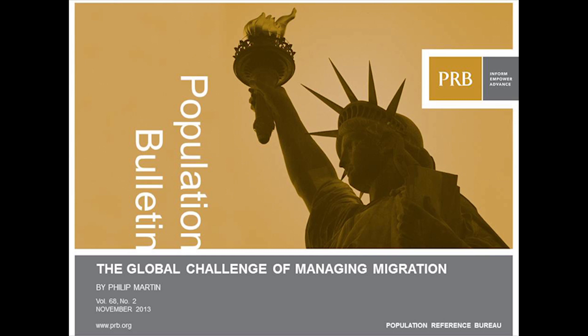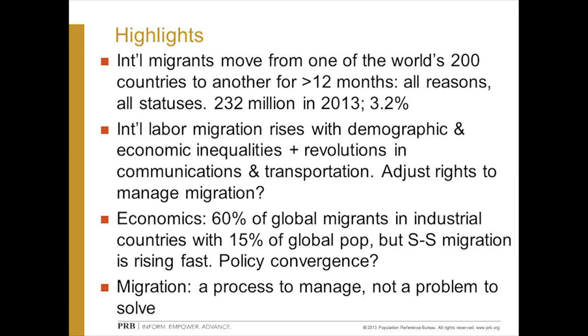Let's begin. First, I want to thank PRB and all the participants. What I want to do in my few minutes is summarize the main points of the bulletin — to emphasize that the share of the world's population who are international migrants is 3%, not 30%. I'll highlight some regional variations between Europe, Asia, Africa, North America, and South America, and talk about mechanisms to ensure that migrants are protected and that migration is mutually beneficial.